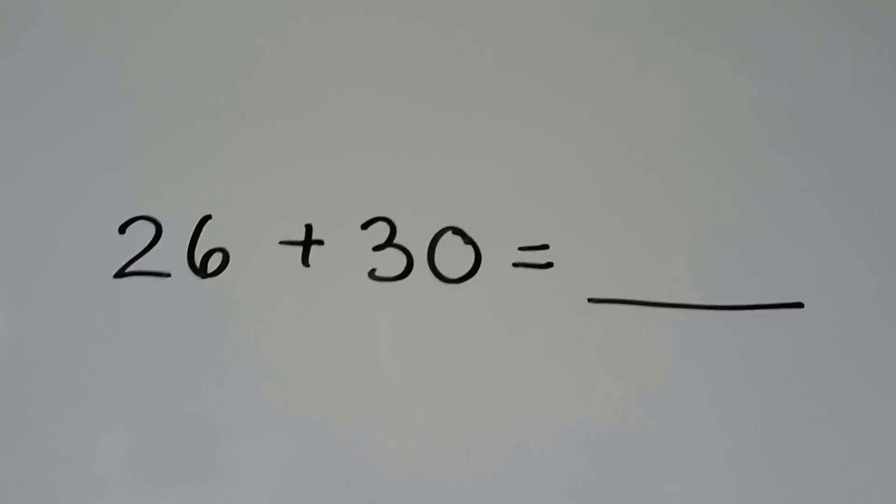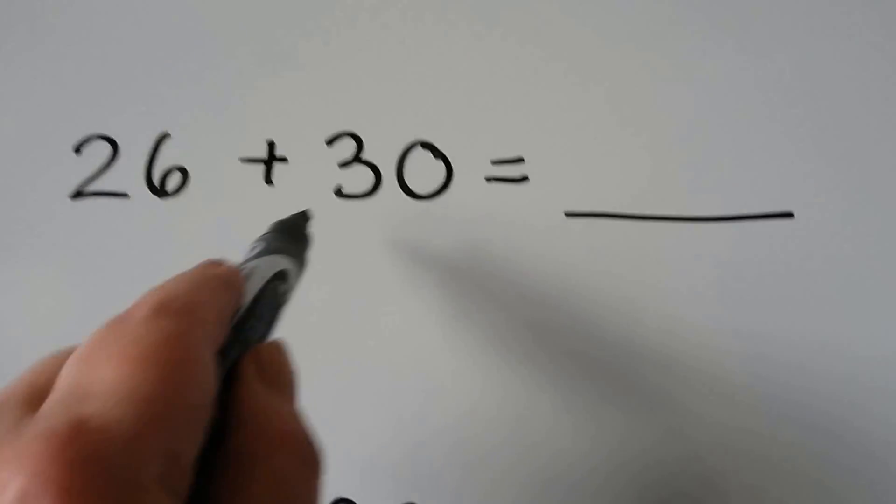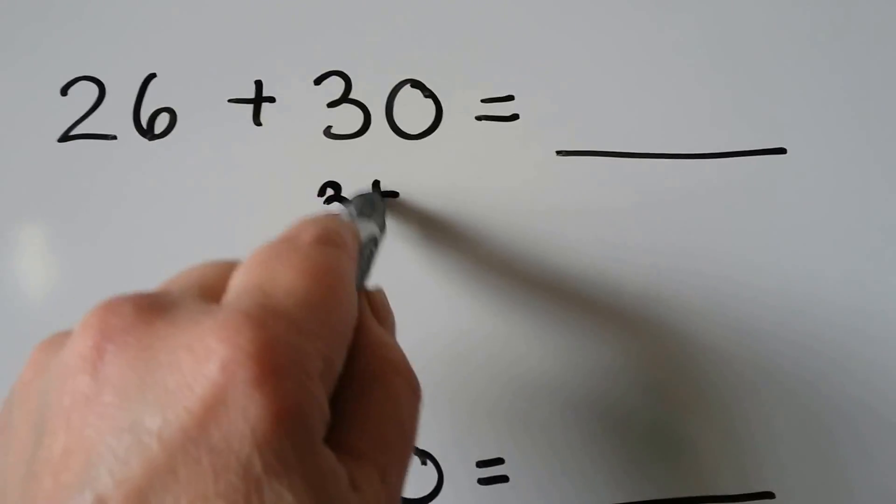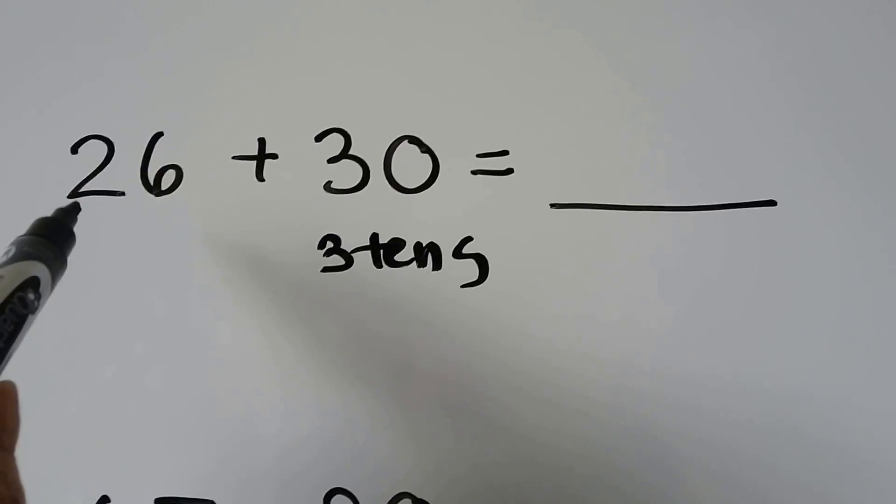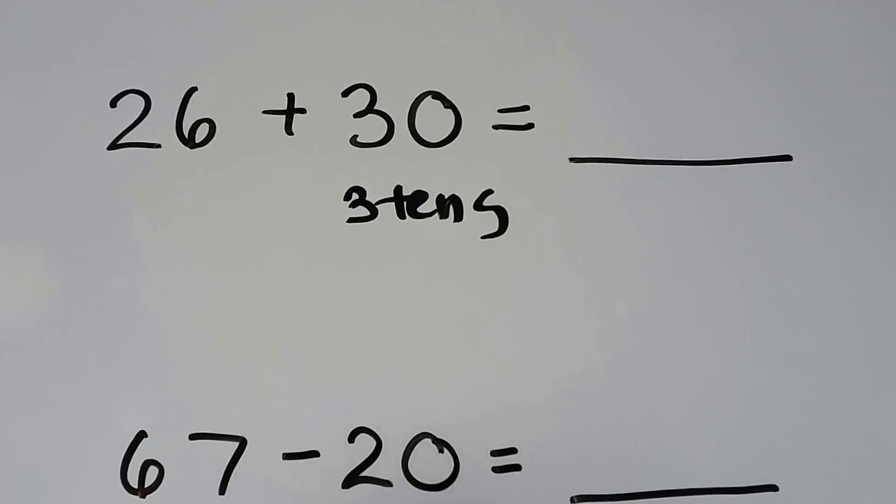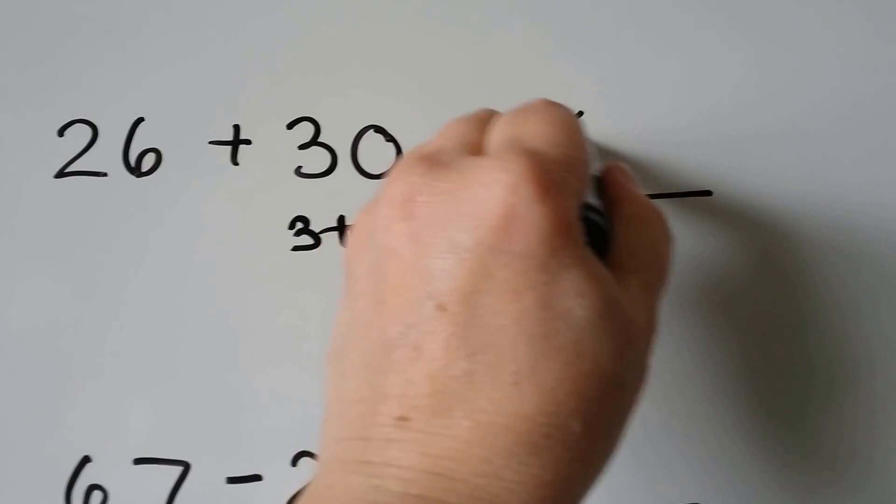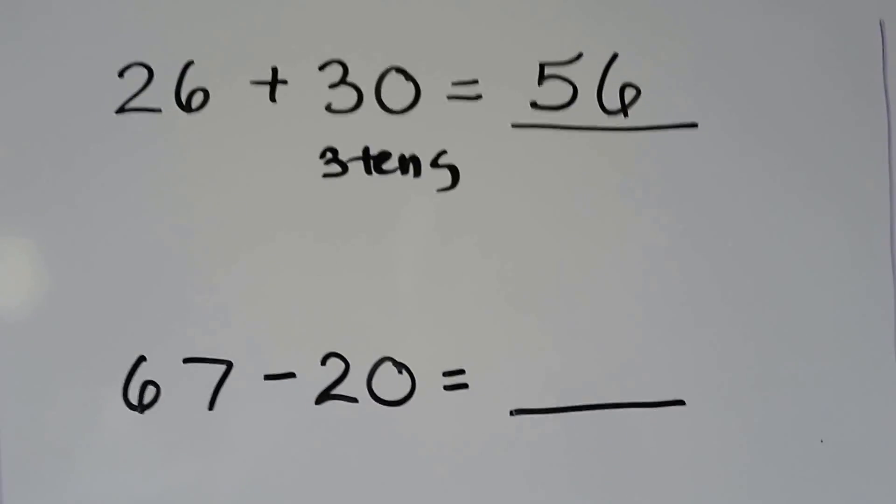Here we have 26 plus 30. That means we have 26 plus 3 10s, doesn't it? So we can count on by 10s. 26, 36, 46, 56. We counted on 3 10s.